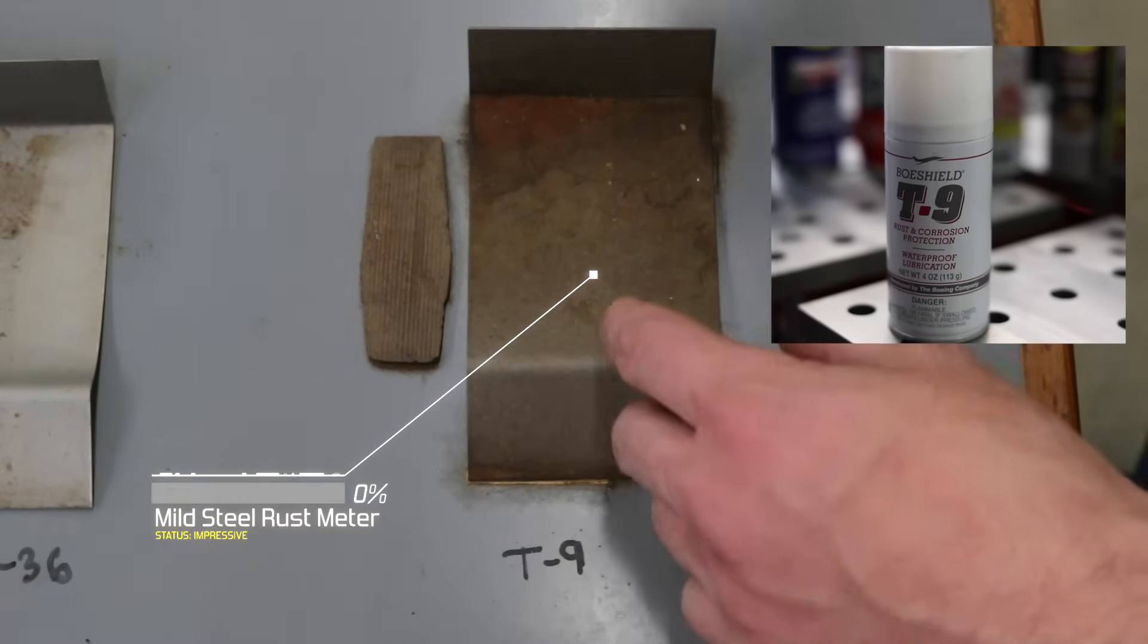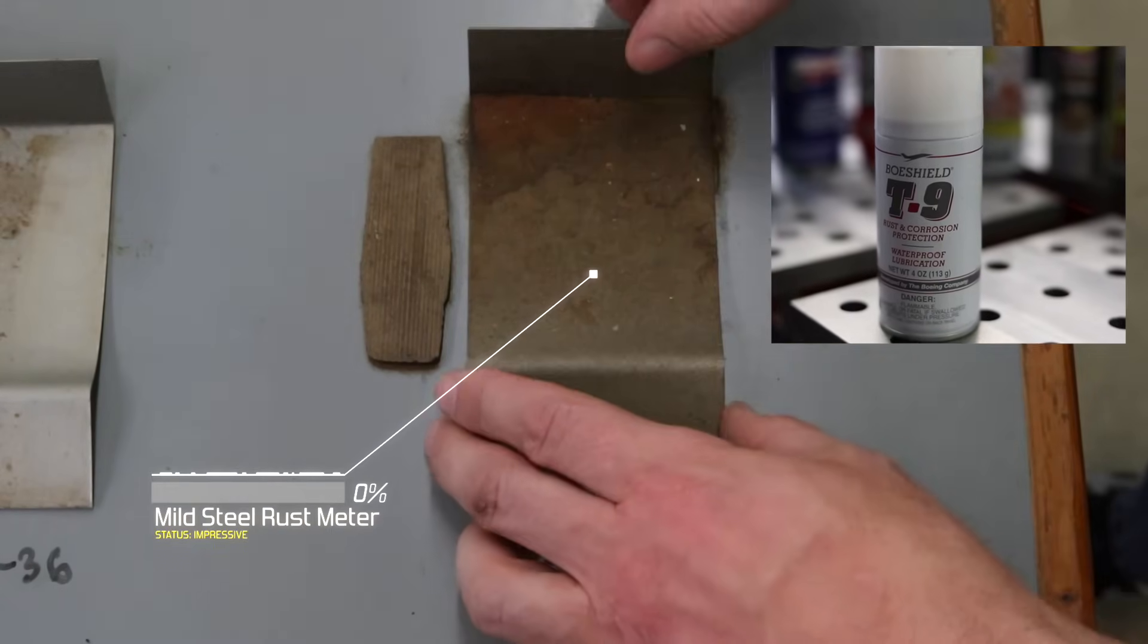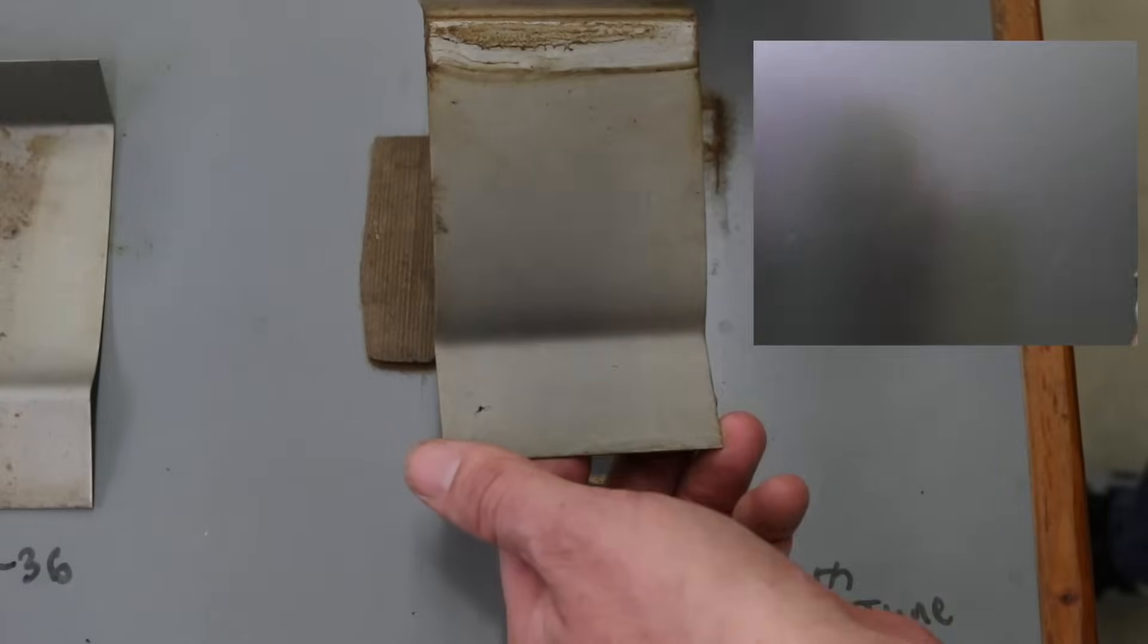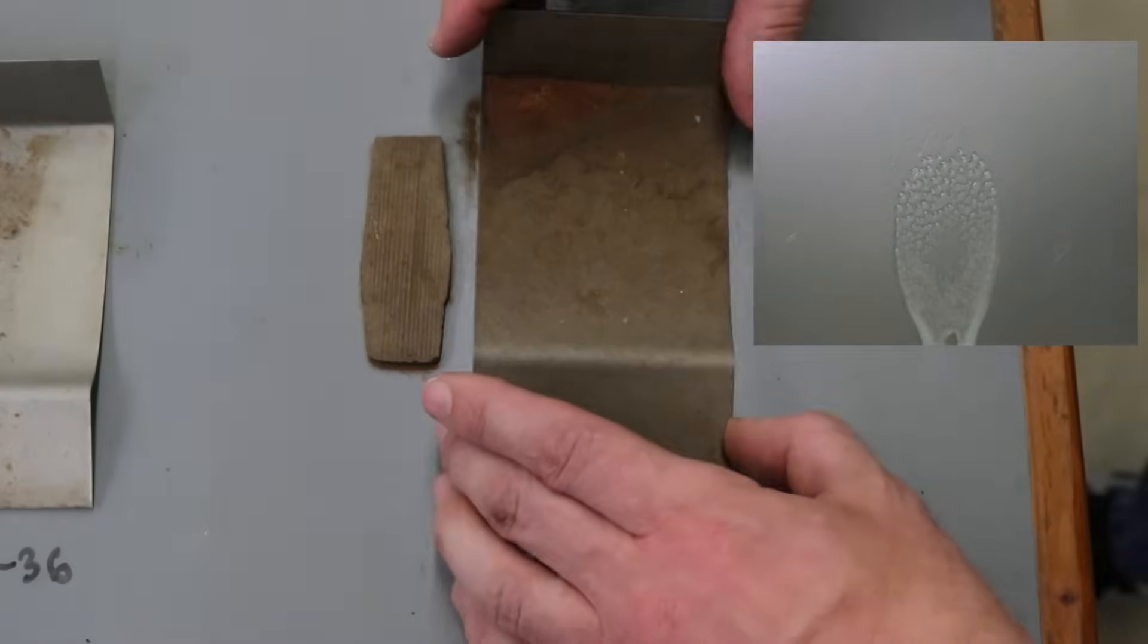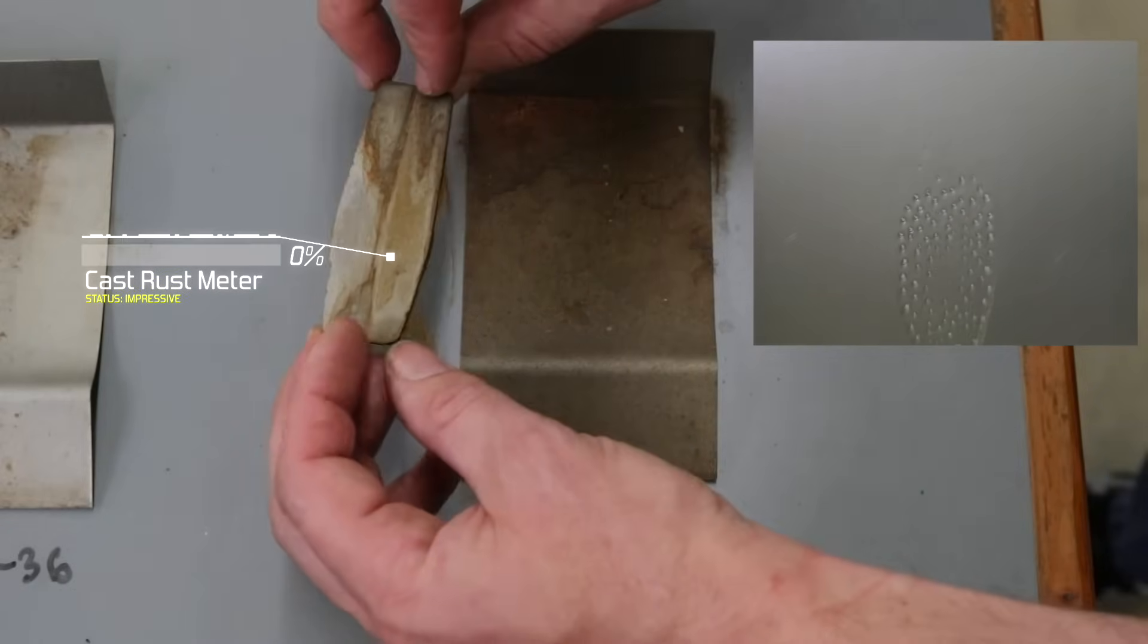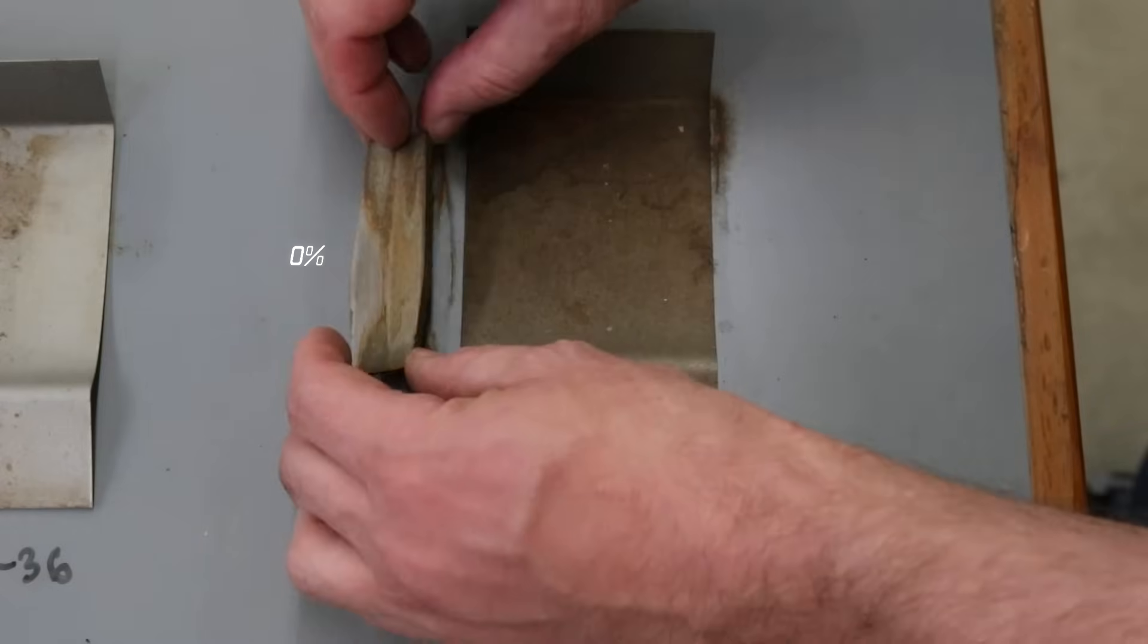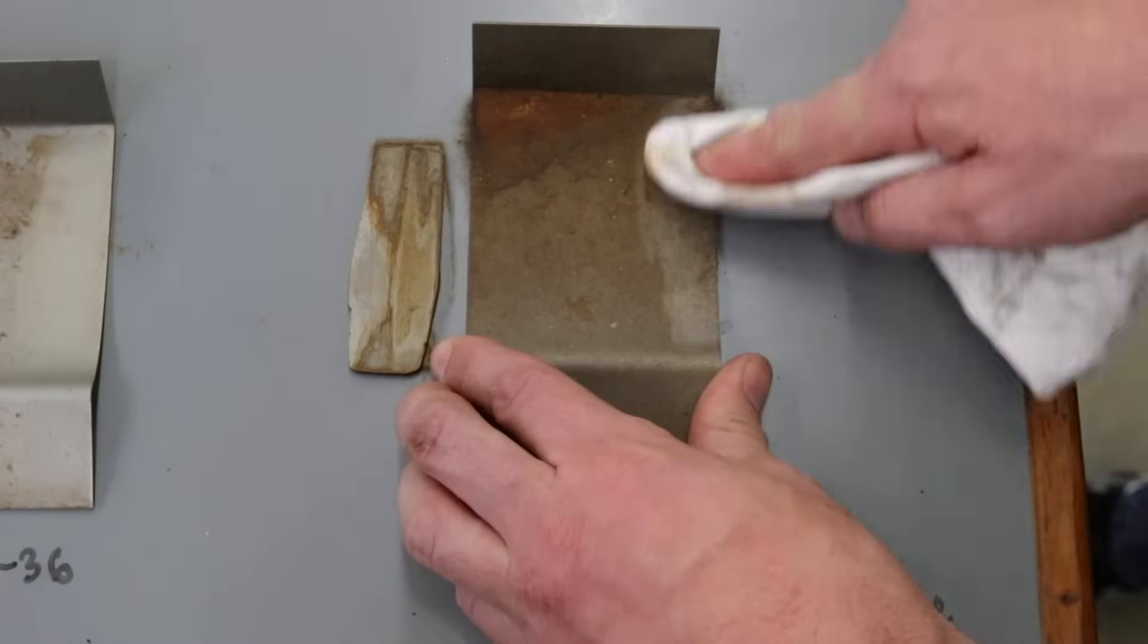The T9 did a fantastic job in the rust department. But it left the metal tarnished. It's kind of expensive, and you don't get a lot in the can. But it does apply nice. The tarnish or the discoloration was very hard to remove. I don't know if I'd want this on my equipment.